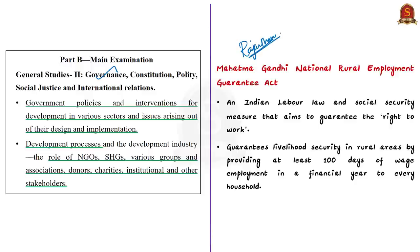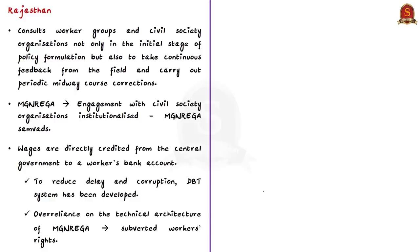We'll see how the implementation of MGNREGA has worked in Rajasthan. This Mahatma Gandhi National Rural Employment Guarantee Act is an Indian labor law and social security measure that aims to guarantee right to work. It guarantees livelihood security in rural areas by providing at least 100 days of wage employment in a financial year to every household. What they are doing is they have this healthy tradition of consulting with worker groups and civil society organizations not only in the initial stage of policy formulation, but also taking continuous feedback from the field and carrying out periodic midway course corrections.